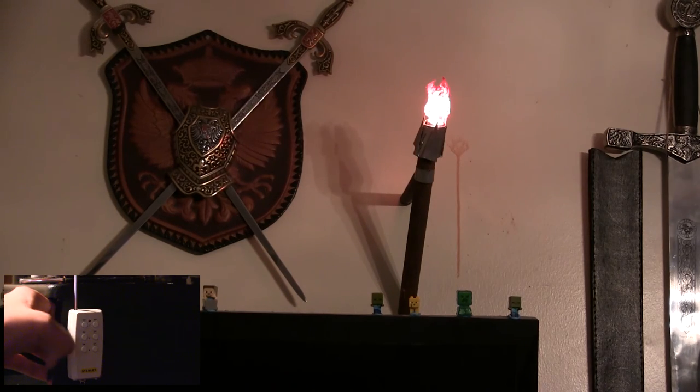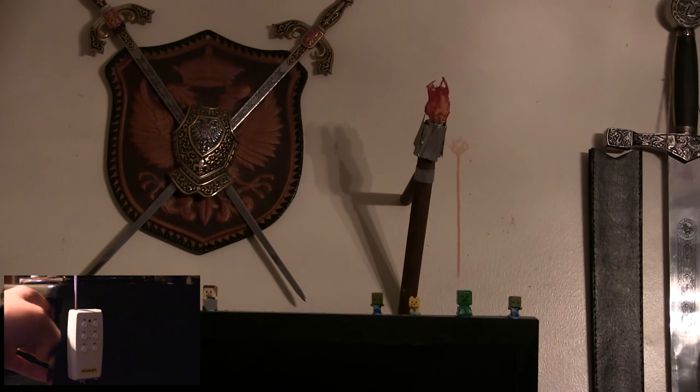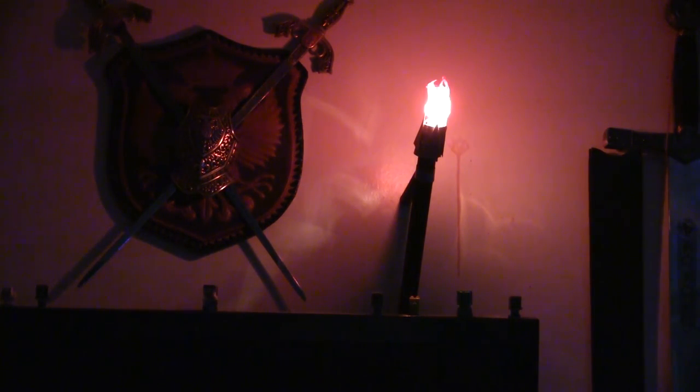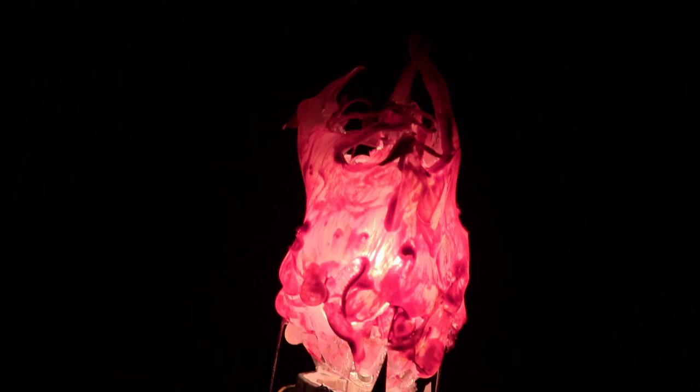So if you connect it to a remote, you can turn it on and off and hang it somewhere like behind a TV like I did. So you can't see the cord. And this is what it looks like when the lights are off. And the camera doesn't really catch the flame part of it that well. So here's a picture of what it actually looks like when it's lit up in the dark. That's how to make a torch that you plug into the wall.